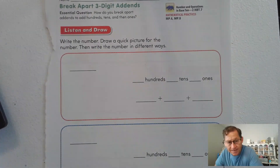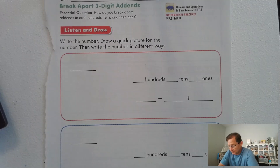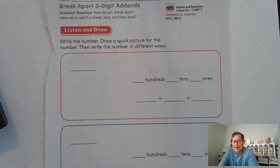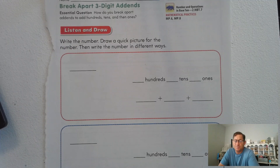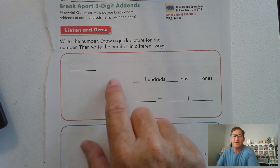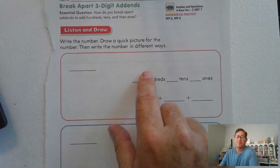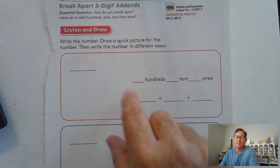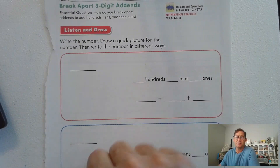Here's the first problem. After I finish reading it, I want you to pause and fill in the top box. Write the number two hundred fifty-eight on the blank in the left corner of the first box. Also draw a quick picture for that number in the space. Go ahead and pause the video, draw a quick picture, break it apart into its hundreds, tens, and ones, and tell me the value of each digit.